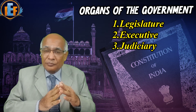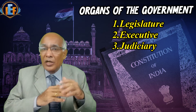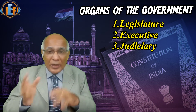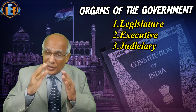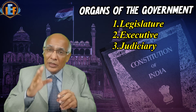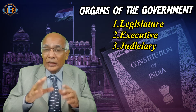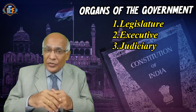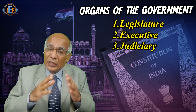The judicial system gives judgments. It examines laws, disputes between the people, between the people and the government, and various other aspects. The executive is the functional executive — it implements the laws made in the country and abides by the Constitution of India.